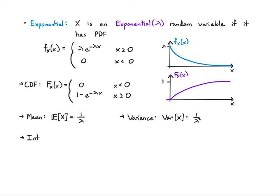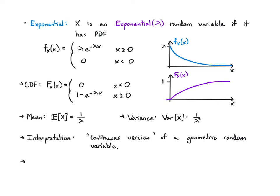The interpretation: think of this as a continuous version of a geometric random variable. In the discrete case we were waiting for the first success; here it's a memoryless way of waiting for the first thing to happen in continuous time, starting at zero. An application might be modeling a hard drive lifetime, or a simple model of the infectious period of a disease — though it can take any value up to infinity, so it's an analytically tractable approximation.